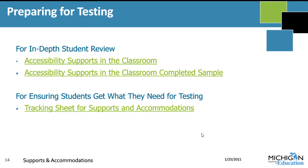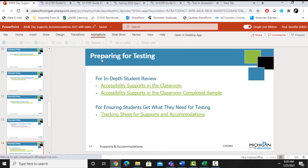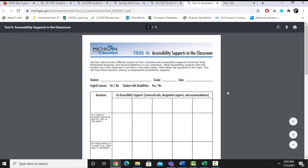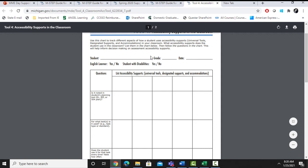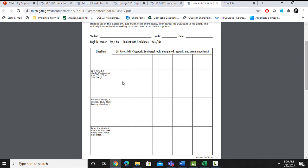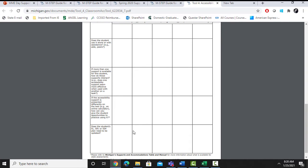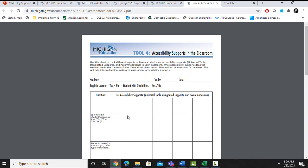Some other things you should be aware of that could help in your planning: we do have tools you can use at the individual student level. The accessibility supports in the classroom tool is a great way to mark up a student's needs on paper. The table on this document allows you to take notes about what information may be in a student's instructional plan, when the student uses that type of tool, and the frequency with which they use it. This is a really intensive deep dive at the student level, but could be useful in your planning.